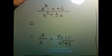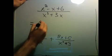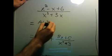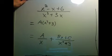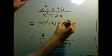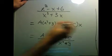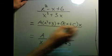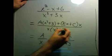So what exactly are we solving? Let's get a common denominator. We get a times x squared plus 3 plus bx plus c times x all over x times x squared plus 3.